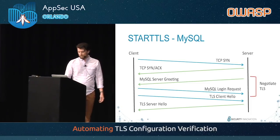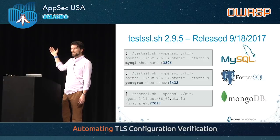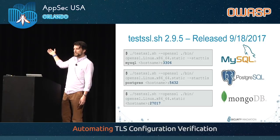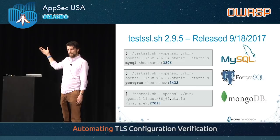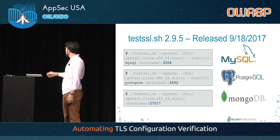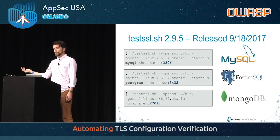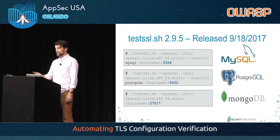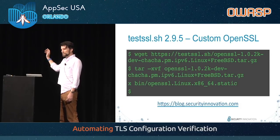TestSSL.sh — also conveniently the website name — released on Monday, has this capability natively in the current released version. Download the tool, download a custom OpenSSL binary (since the implementation is still in master and not yet released), run it against the port, and voilà. There's also a blog post at blog.securityinnovation.com up right now with the specifics. Please start running it — download it today. You do need that custom OpenSSL package, already compiled and available on TestSSL. The instructions are on the blog.